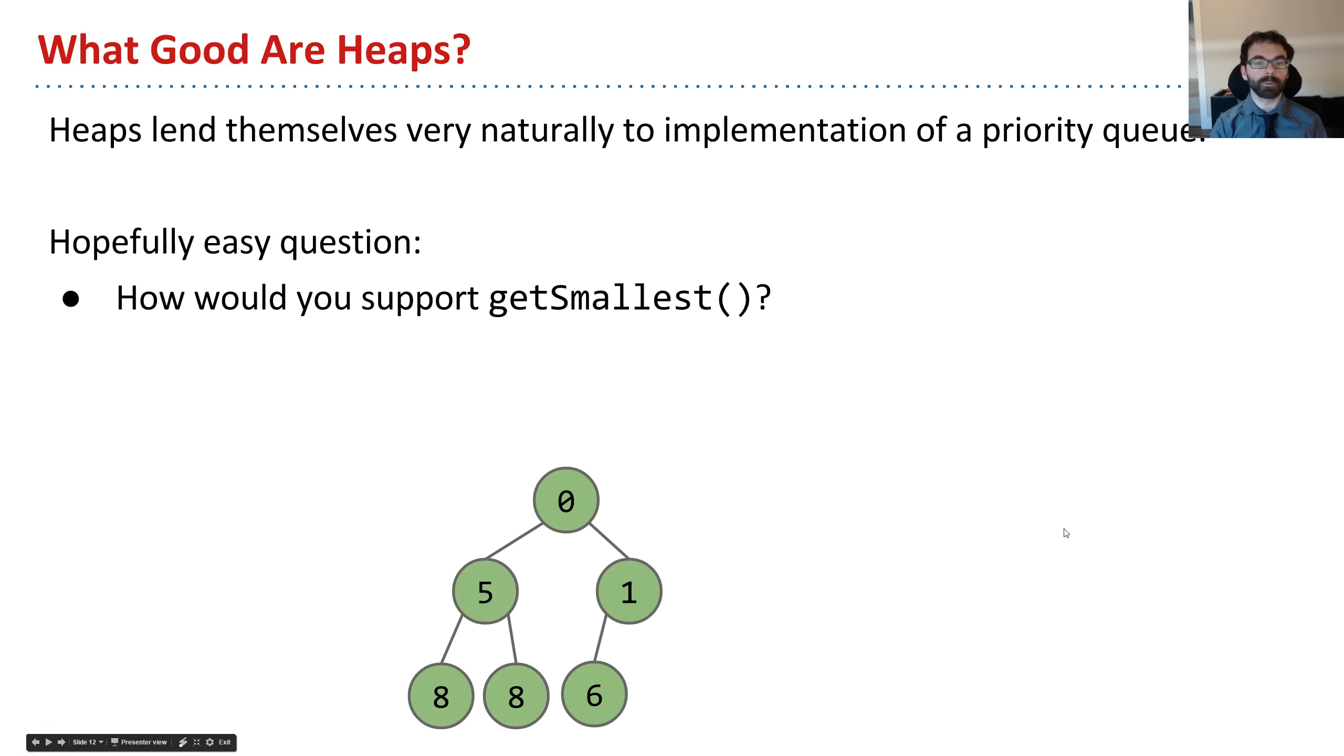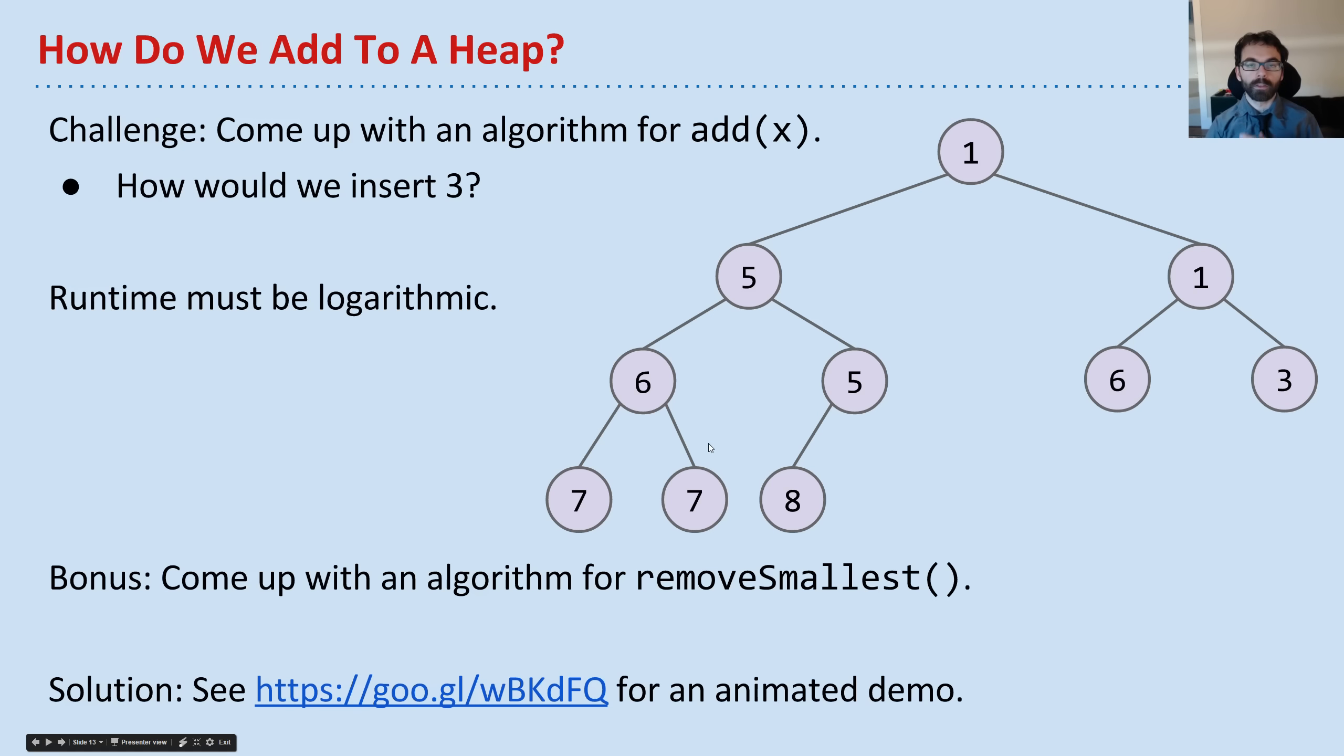So why do we care about heaps? What's good about them? Well, heaps lend themselves very naturally to building a priority queue. They're basically invented to do priority queues. So one question that pops up then is how do we start supporting all the operations? The first question I hope is fairly easy, which is how would you support getSmallest? If I gave you an entity like this, a tree, possibly unimaginably large with quadrillions of elements, and I told you where's the smallest thing, how would you return it? The answer is it's always going to be at the root, because this is the item which is smaller than everything in the left and the right subtrees, so the smallest must always be at the top.